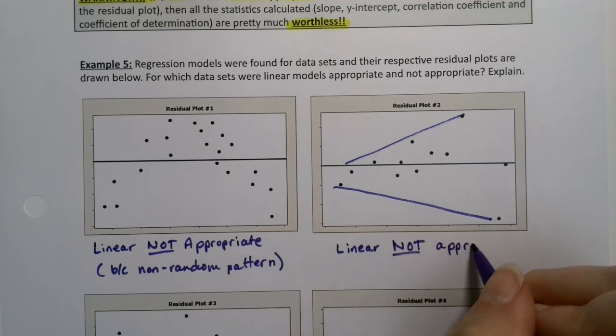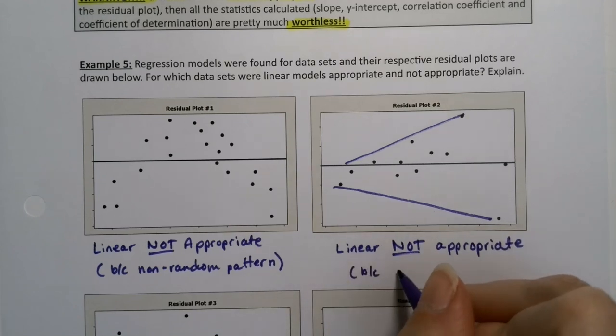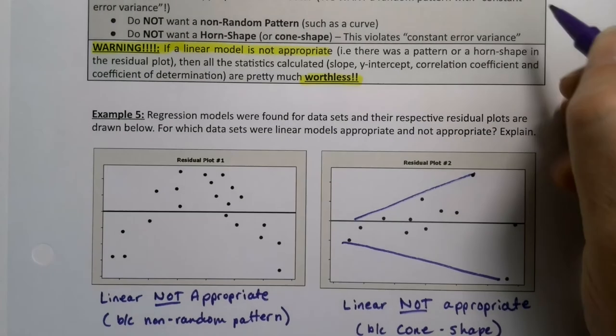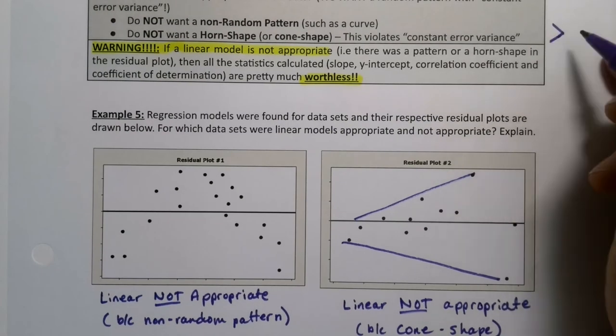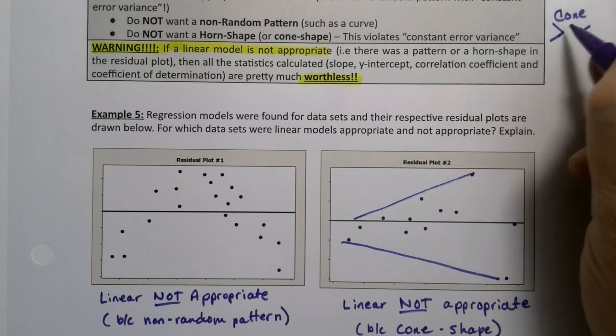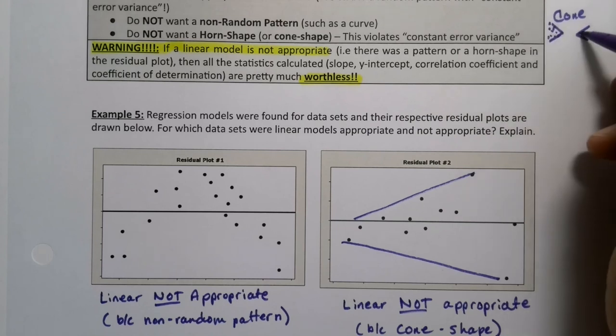And so, your slope and your intercept and all of that good stuff should be tossed out. And you can get cone shapes both directions, by the way. This one's opening up to the right. You can also have cone shapes to the left, like that, or to the right. These are cone shapes.